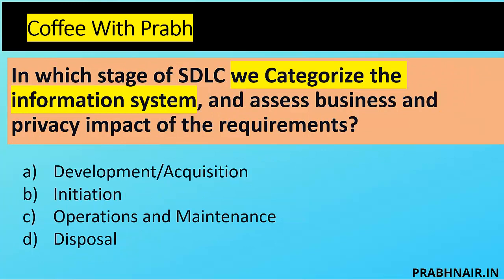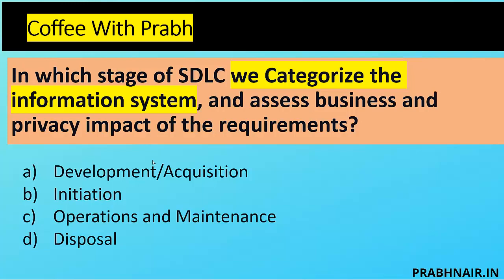Next question: In which stage of SDLC do we categorize the information system and assess the business and privacy impact of requirements? We are assessing, not documenting, so C and D are removed. After documenting and finalizing, we launch requirements to developers who build based on them — so A is also removed. The only option left is B — Initiation.